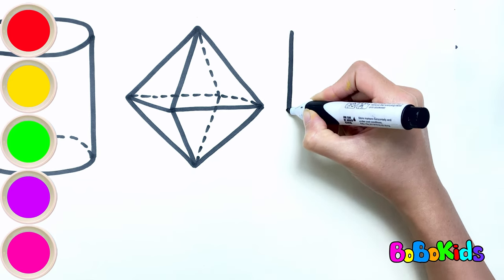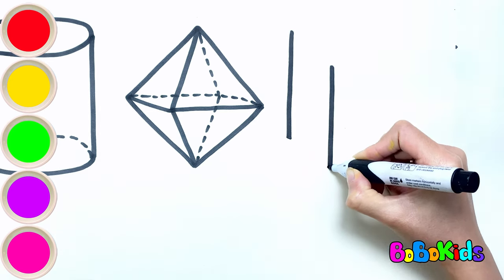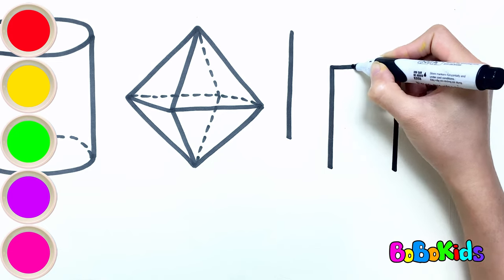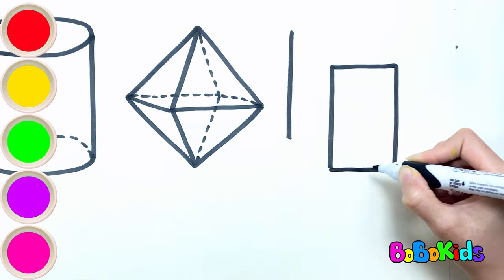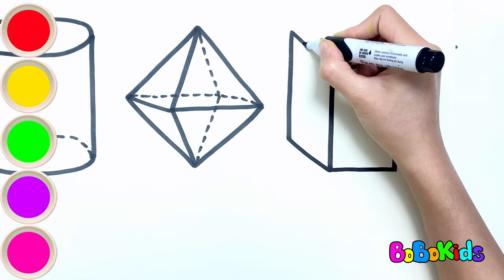The third is a rectangular box. Here we will draw a rectangle. Then please draw according to Bobo, step by step to make sure we don't miss any details.